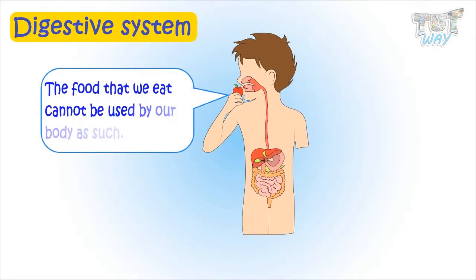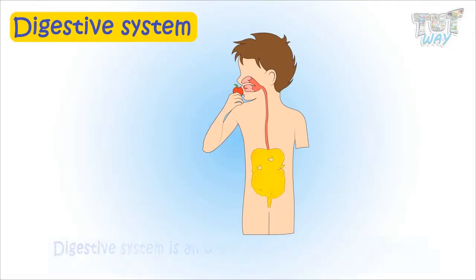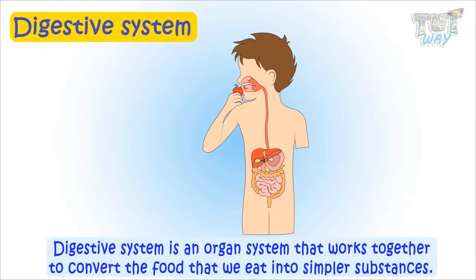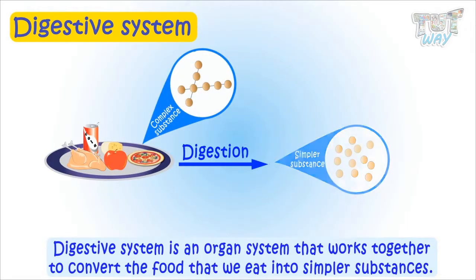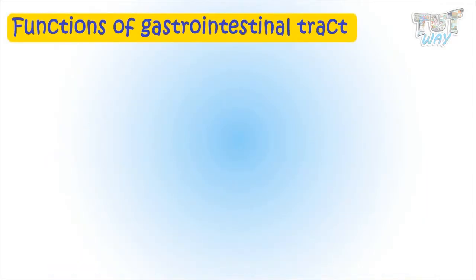The food we eat cannot be used by our body as such. The digestive system is an organ system that works together to convert the food that we eat into simpler substances, or nutrients, that can be used by the body for growth and maintenance. Now let's learn the main functions of the alimentary canal, or our GI tract.